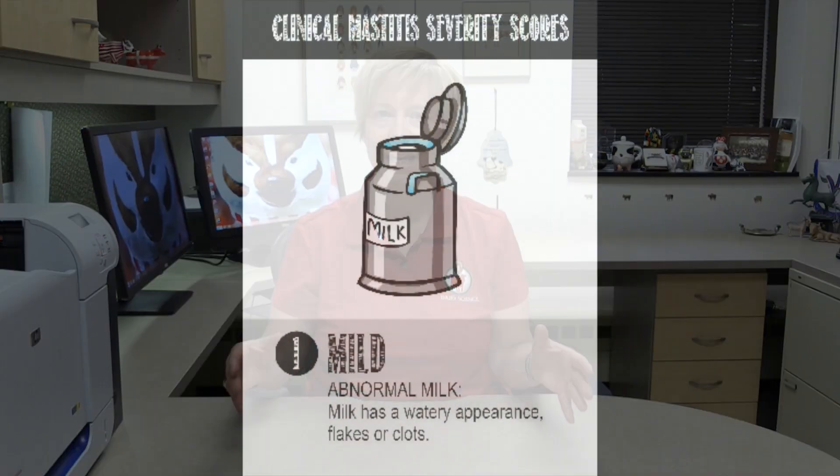The severity scoring system that we use consists of three levels. Severity score one is a mild case of mastitis. The only symptom of a severity score one case is that the milk of the cow appears abnormal — it has clots, or it's watery, or it simply has an abnormal consistency. That would be a severity score one case.